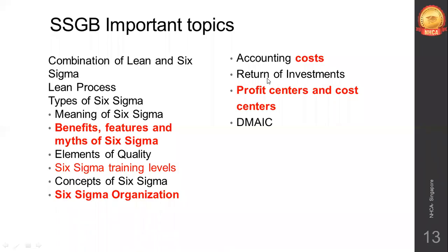The combination of Six Sigma and Lean — its importance, how it helps, and the meaning of Six Sigma. Please be very careful about all the images and graphs you see in the textbook; the same images may appear and you'll have to identify the context behind them. Also cover lean process, types of Six Sigma, meaning of Six Sigma, and the benefits, features, and myths of Six Sigma.